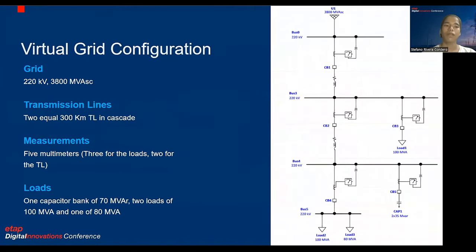Now let's talk about the virtual grid configuration. The virtual representation of the system consists of a 220 kilovolt network connected to two cascade transmission lines of 300 kilometers each. In turn, the lines are connected to two loads of 100 megavolt ampere and one of 80 megavolt ampere, as well as a bank of capacitors of 70 megavolt ampere for voltage control.